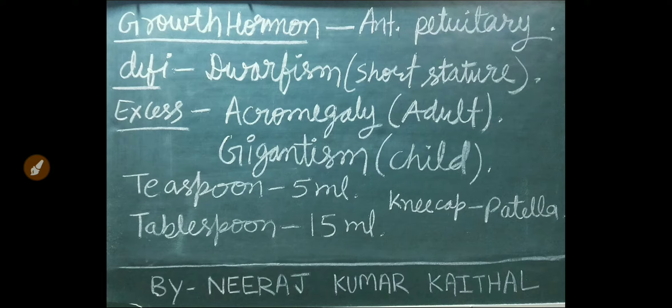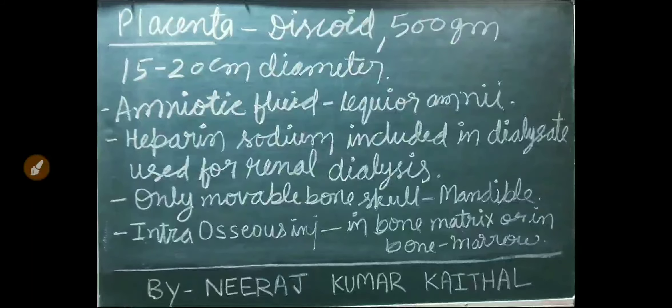One teaspoon means 5 ml. One tablespoon equals 15 ml. Patella is the kneecap. Placenta is discoid in shape. Its weight is 500 grams and it is 15 to 20 cm in diameter.